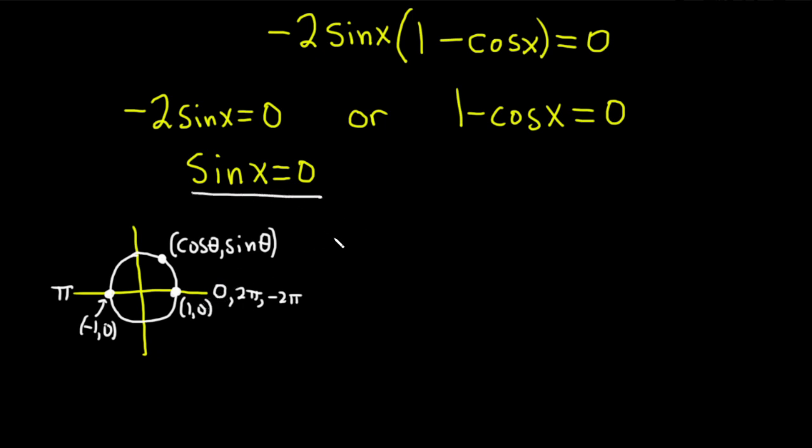So this equation, sine x equals 0, is going to give us the answer x equals n pi, where n is an integer. That's what we're going to get from that first equation.